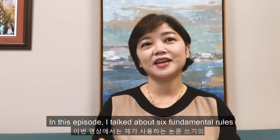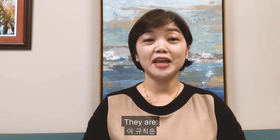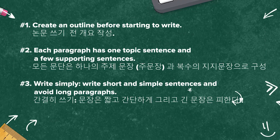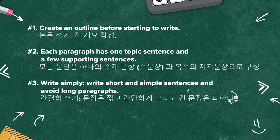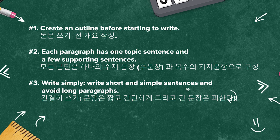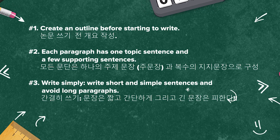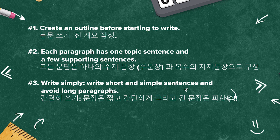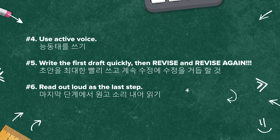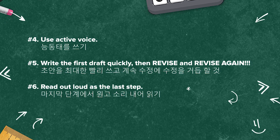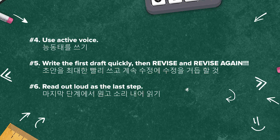In this episode, I talked about six fundamental rules I have followed in academic writing. They are: number one, create an outline before starting to write; number two, each paragraph has one topic sentence and a few supporting sentences; number three, write simply — write short and simple sentences and avoid long paragraphs; number four, use the active voice; number five, write the first draft quickly, then revise and revise again; number six, read out loud as the last step.